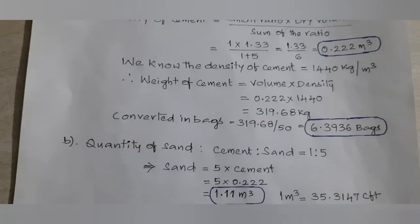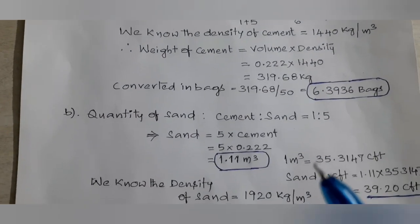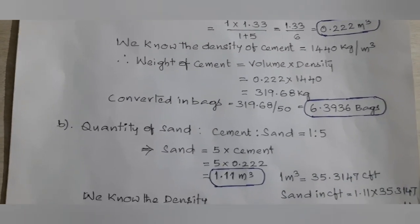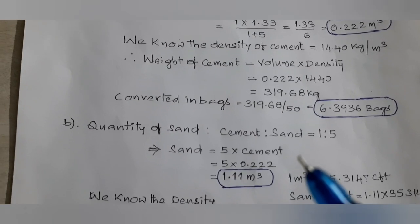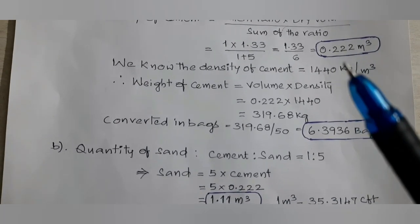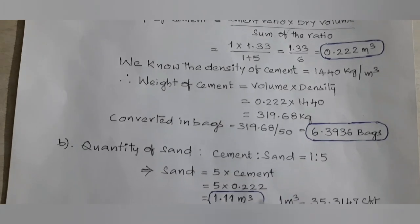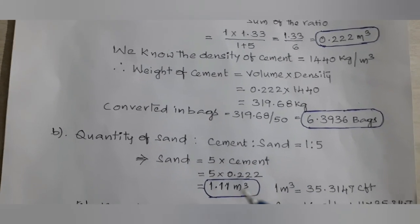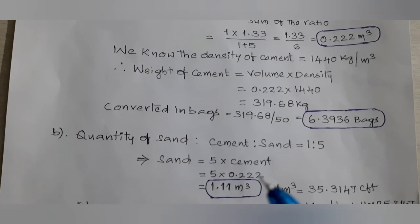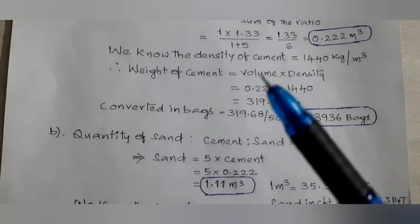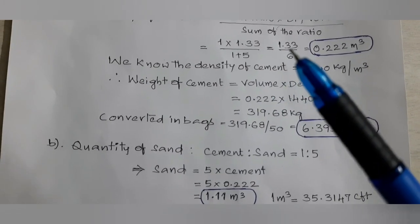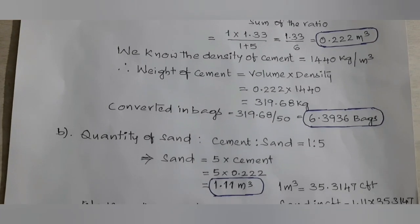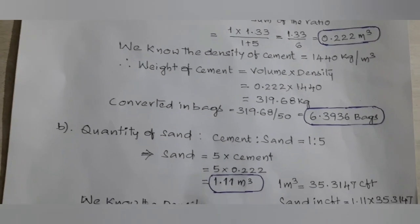Next, we calculate the sand quantity. The proportion is cement to sand equals 1:5, so sand equals 5 into quantity of cement. Cement quantity is 0.222 cubic meters, so 5 into 0.222 equals 1.11 cubic meters. This means 1.11 cubic meters of sand is required for the preparation of 1 cubic meter of cement mortar with a 1:5 proportion.